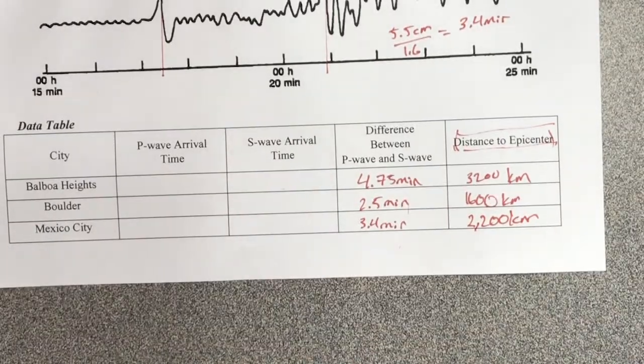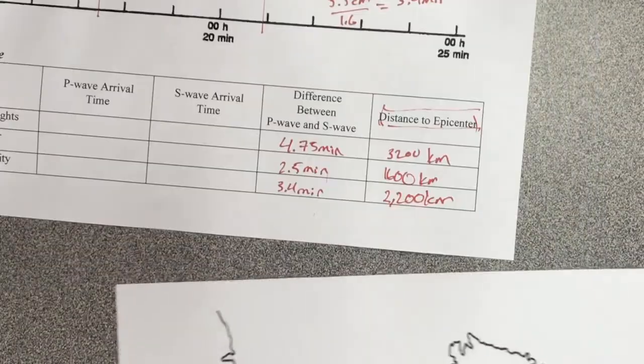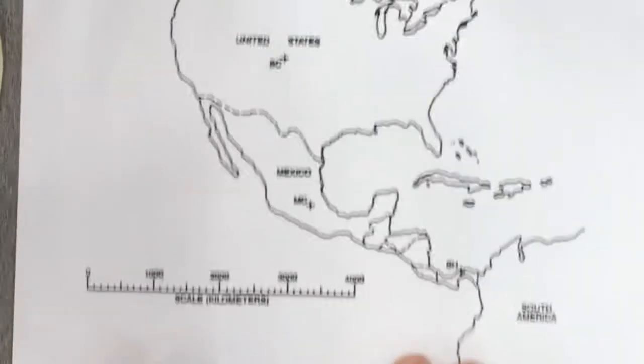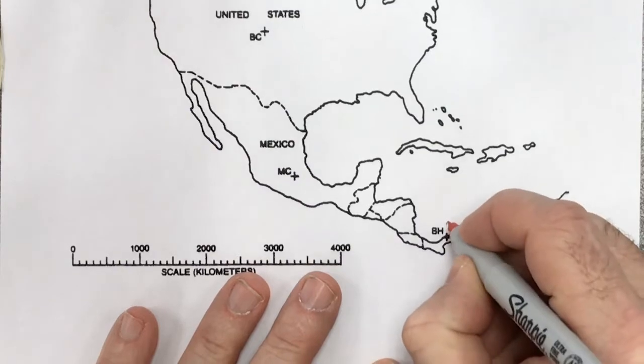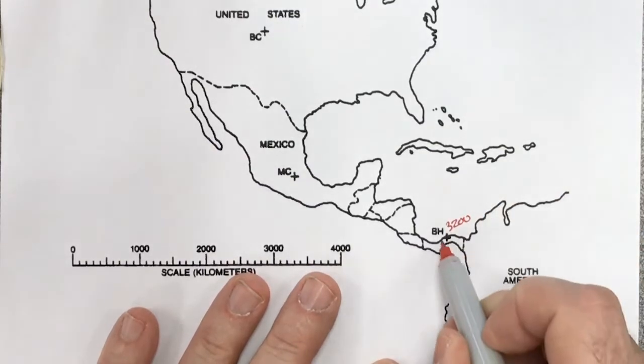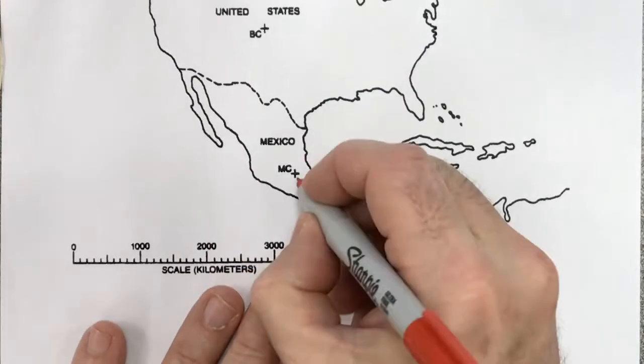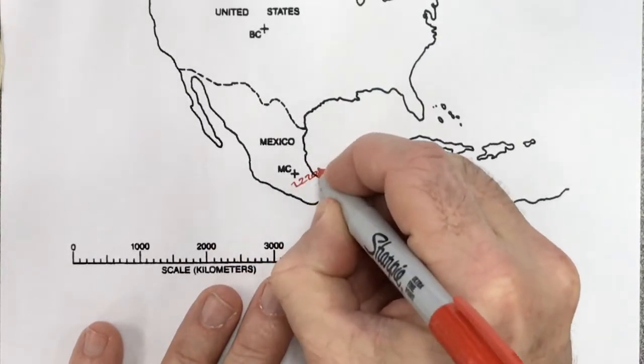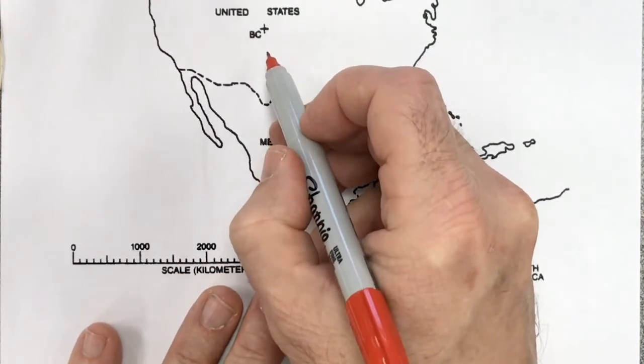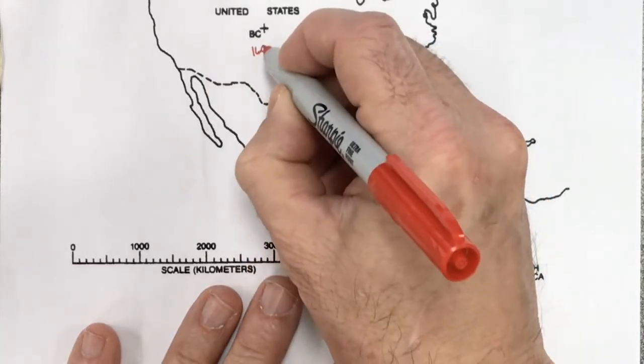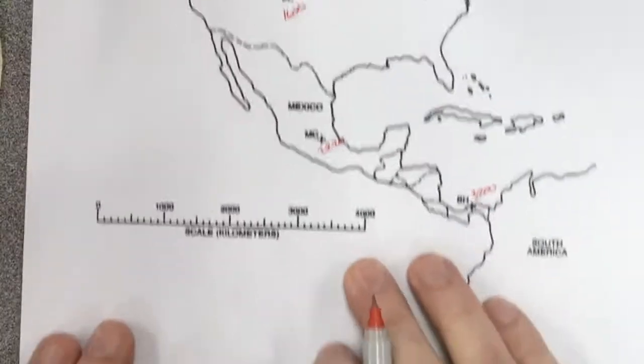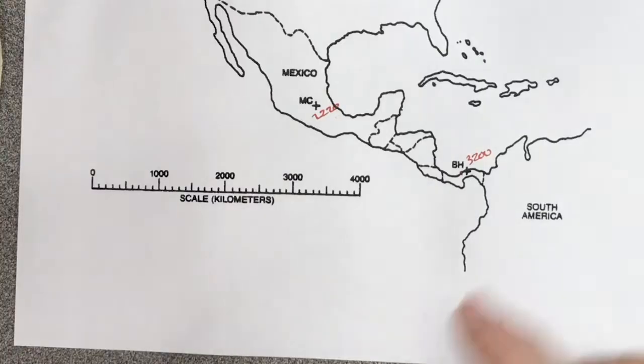So now what we're going to do is actually plot this on a map. So we've got these numbers. Here's the map. Here's Balboa Heights. And at Balboa Heights, I'm going to say that this is 3,200. Mexico City was 2,200. And Boulder, Colorado was 1,600. So now what I'm going to do is I've got a scale right here. And I'm going to do one at a time.